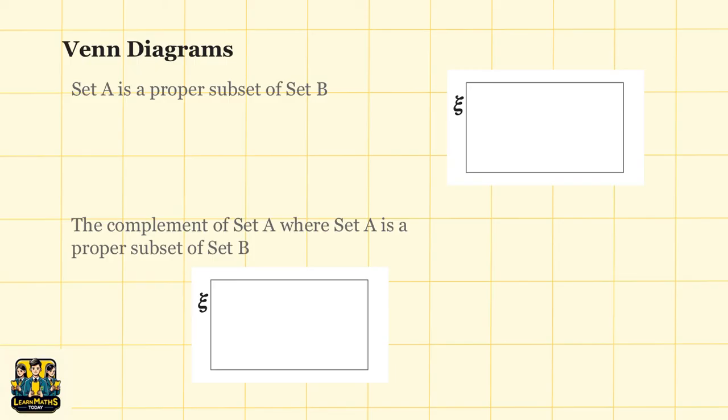In other words, set A is completely contained within set B, and set A is definitely smaller than set B. Therefore, you could draw a circle to represent set A, and you could draw a bigger circle to represent set B. And in order to show that set A is a proper subset of set B, you have to move the circle representing set A to be within the circle representing set B.